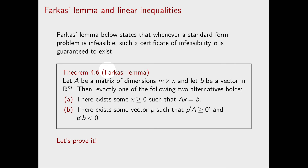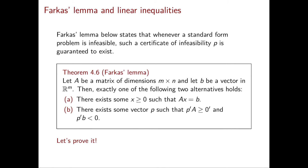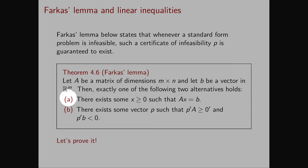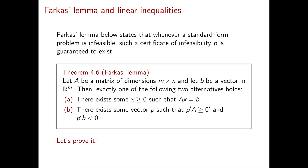So now let's read the statement of Farkas Lemma. Let A be a matrix of dimensions m×n and let b be a vector in R^m. Then exactly one of the following two alternatives holds. (A) There exists some x ≥ 0 such that Ax = b. And (B) there exists some vector p such that p^T A ≥ 0^T and p^T b < 0. In particular, in case A our system is feasible, while in case B our system is infeasible.